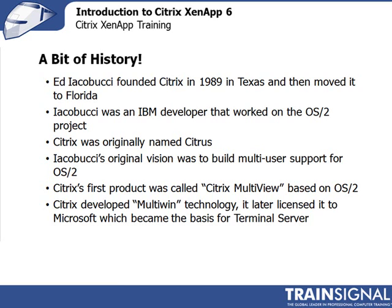NetScaler was based in California, so when Citrix acquired it, they acquired all of that footprint. Iacobucci was an IBM developer working on the OS/2 project, and most of the Citrix execs who started the company were also developers on OS/2. The company was originally named Citrus — you can see the relation to Florida — but that name was already taken. So the name Citrix is a portmanteau of Unix and Citrus, giving you Citrix.